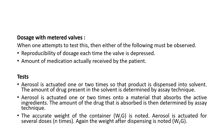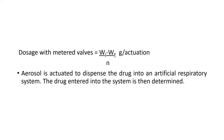The third method: the accurate weight of the container is noted, recorded as W-I-G. The aerosol is actuated for several doses, any number of times. Again, the weight after dispensing is noted as W-F-G. W-I-G indicates the initial weight and W-F-G indicates the final weight. By this calculation, dosage with meter valves equals W-I minus W-F divided by N (number of actuations), giving the quantity in grams per actuation.